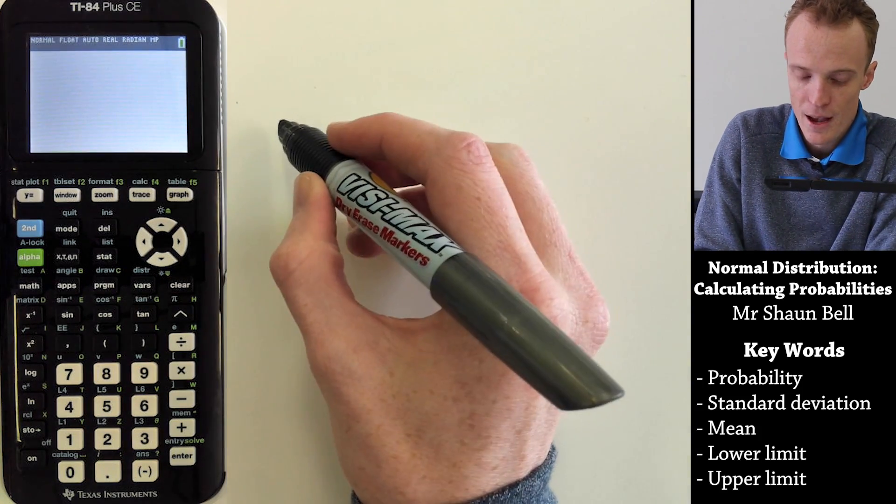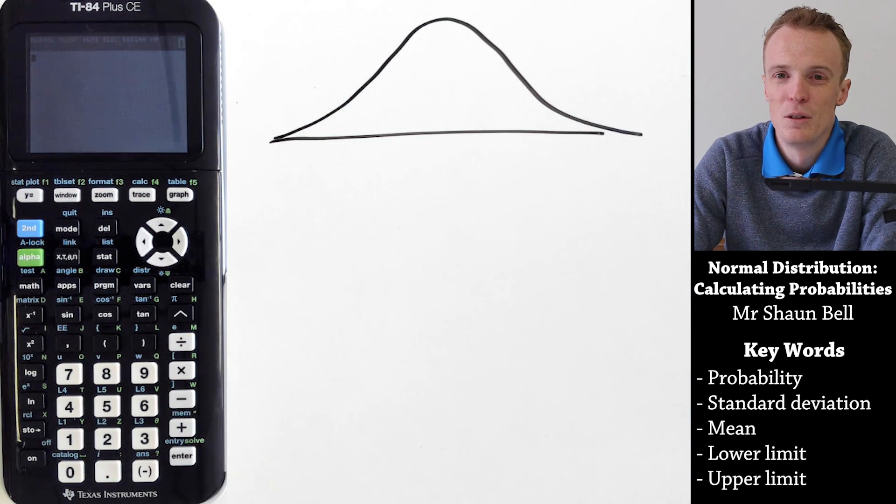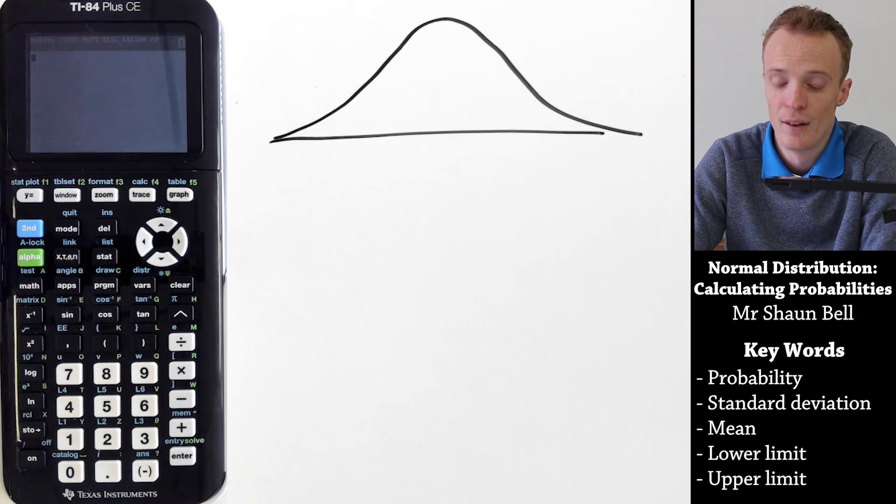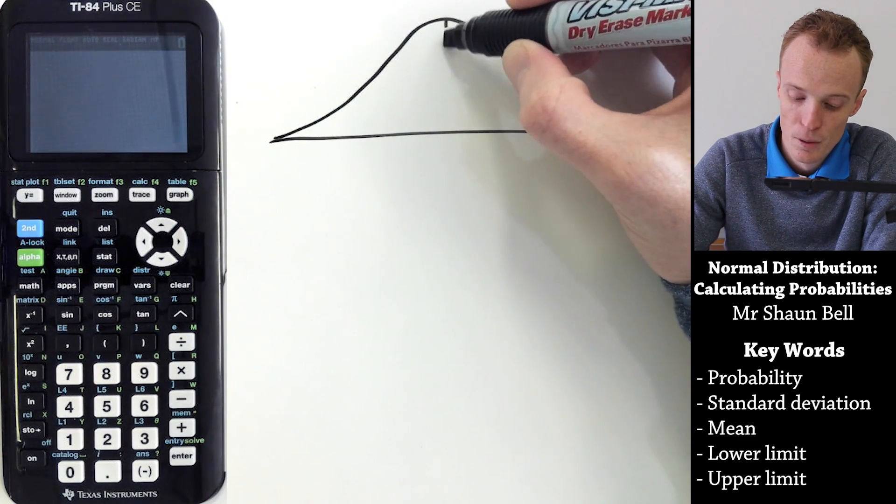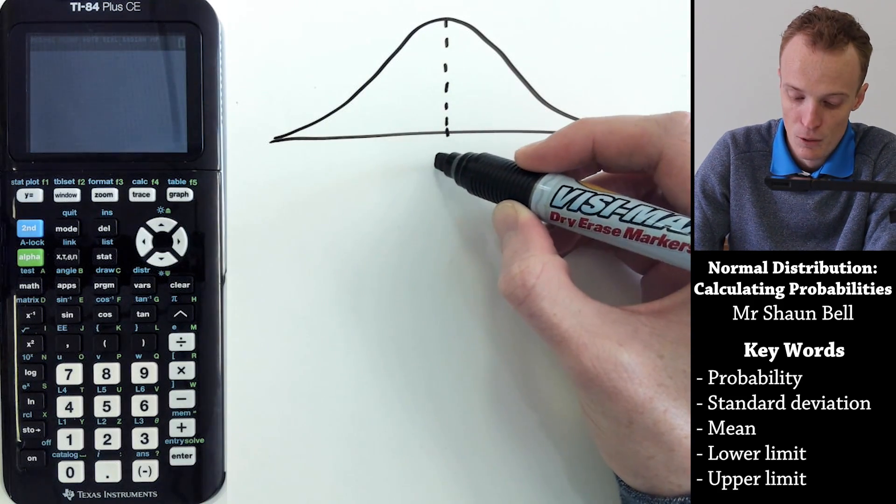So if we have a normal distribution that looks something like this, we do know that 99.7% of the data does fit within three standard deviations. We also know that if it's perfectly normally distributed, the mean will be in the middle here.